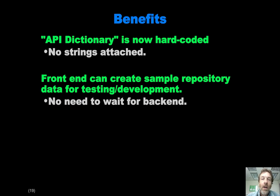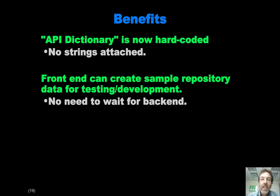The benefit of this approach is that what was a wiki page called the API dictionary is now hardcoded into the system. There are no strings to manipulate, so there will be no problems with uppercase, lowercase, and that kind of stuff. A second nice benefit is that the front end, as it's doing development, can now use the repository implementation right away, populate it with sample data right away, and create a running front end with test data immediately. I think that will speed up front end development considerably. Of course, commands won't do anything until there's a back end that actually supports them. For the back end folks, you've also got less to do because you already have a repository implementation.